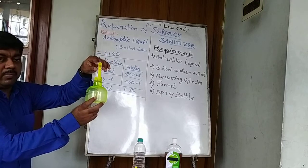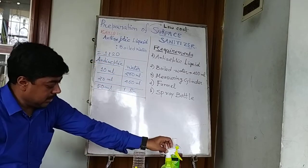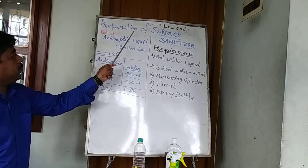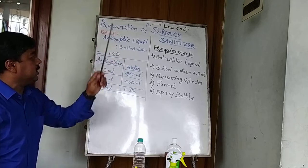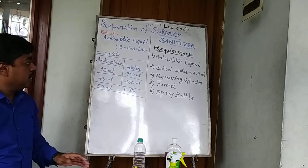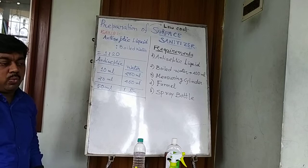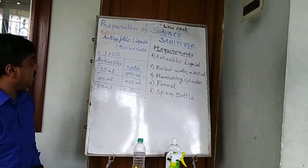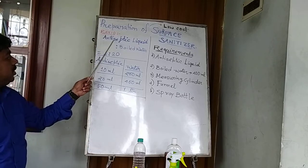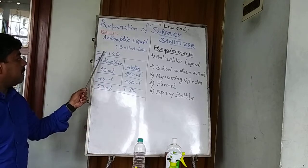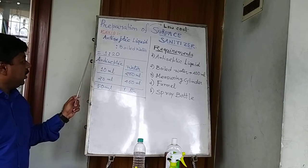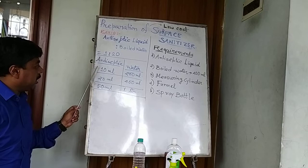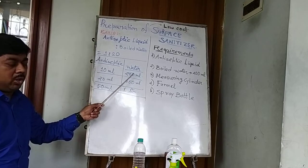So we are going to prepare a low-cost surface sanitizer. The ratio for making the sanitizer is: antiseptic liquid to boiled water = 1 is to 20. If I take 10 ml of antiseptic liquid, I have to take 200 ml of boiled water.